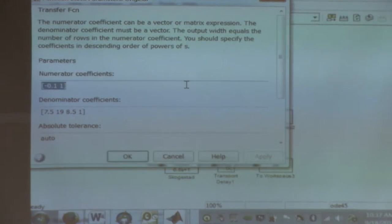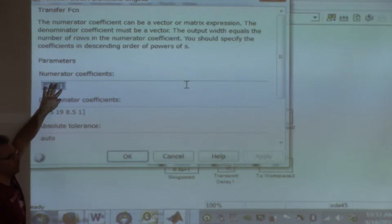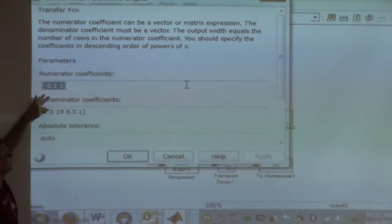So you open this thing up, and what does it want you to do? It wants you to enter the coefficients of the numerator and denominator polynomials. So this says minus 0.1s plus 1. Those are the coefficients of the denominator.